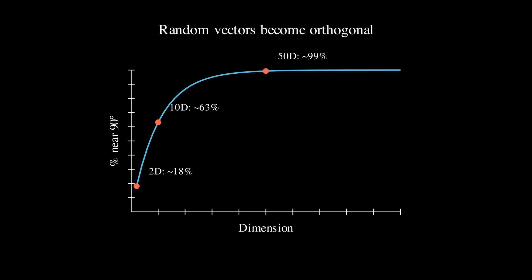And if we were to prove this mathematically, we would obtain that the expected value of the cosine similarity between two random vector units equals zero, with a variance that decreases proportionally to 1 divided by d, where d is the number of dimensions. This explains why the distribution of angles becomes increasingly concentrated around 90 degrees